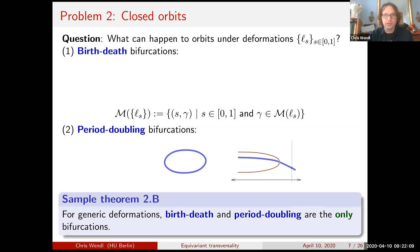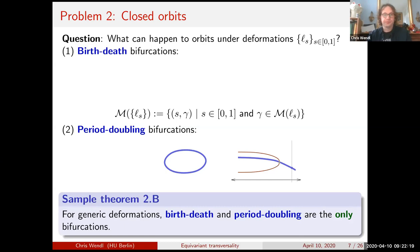Sample theorem 2b: for generic deformations, these two — birth-death and period doubling — are the only things that can happen. There are no other bifurcations that could describe singularities in the moduli space or points where orbits fail to be non-degenerate.